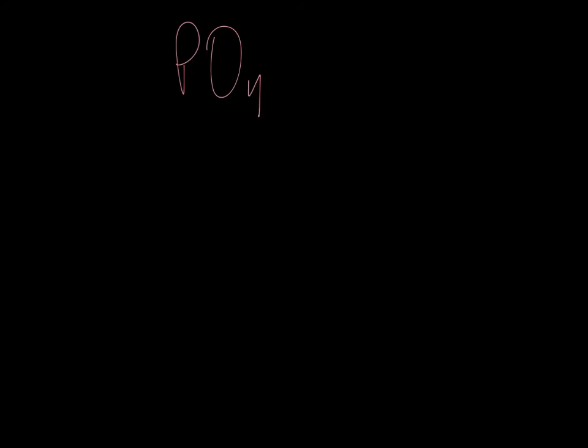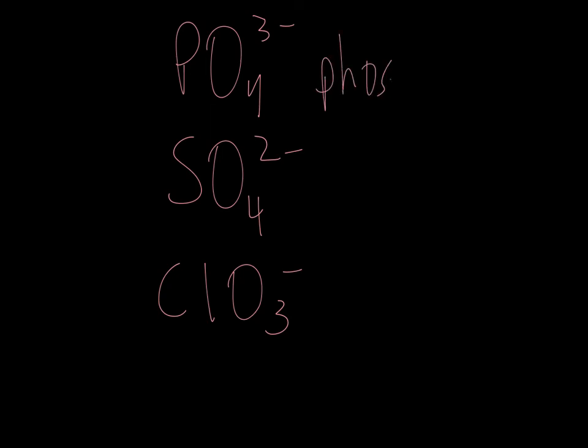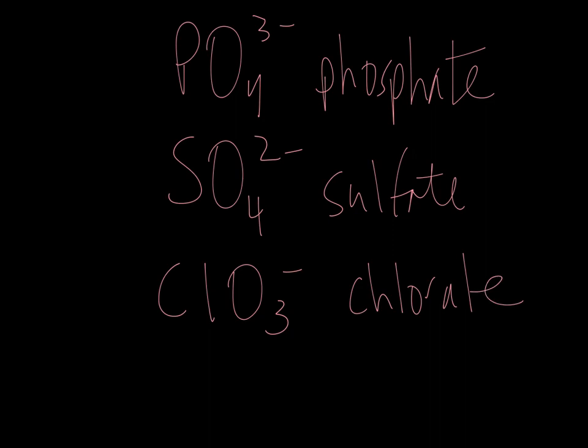Unfortunately, what is the -ate form has very little continuity between different types of ion series. PO4 3- is phosphate, SO4 2- is sulfate, and ClO3- is chlorate. Notice that the charges all change. Sometimes the number of oxygens are the same as they are in phosphate and sulfate, but sometimes not. So you do have to memorize the -ate form of all of the common polyatomic ions that are in the AP summer reading.